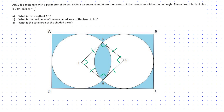We are told that E and G are the centers of the two circles within the rectangle, and the radius of both circles is 7 centimeters. Looking closely at the square, GF and GH are the radius of one circle, whereas EF and EH are the radius of the other circle. Therefore, one side of the square is 7 centimeters.